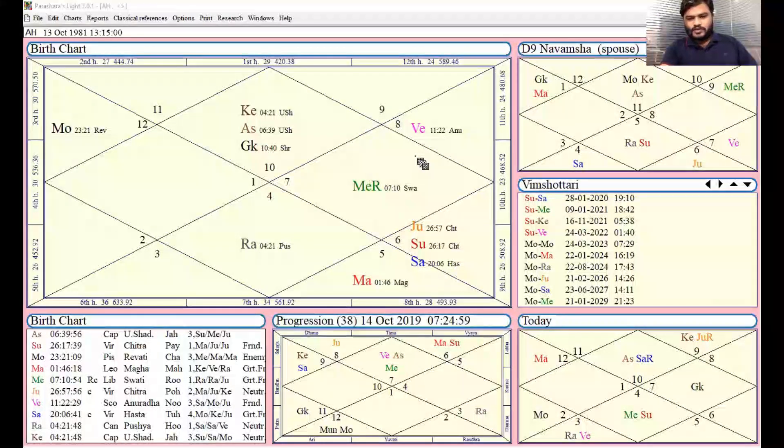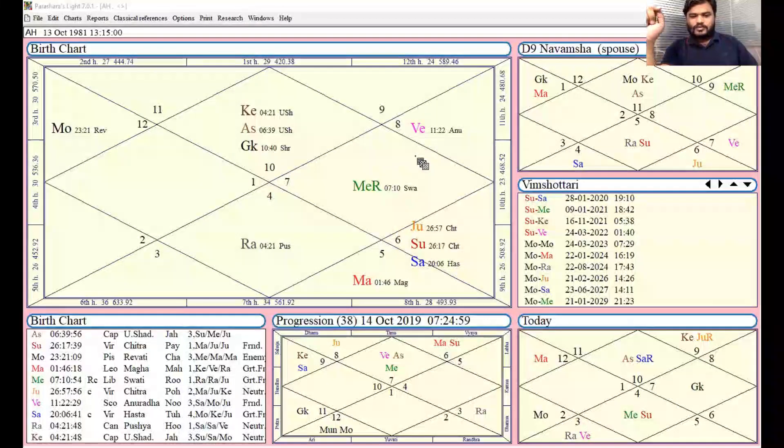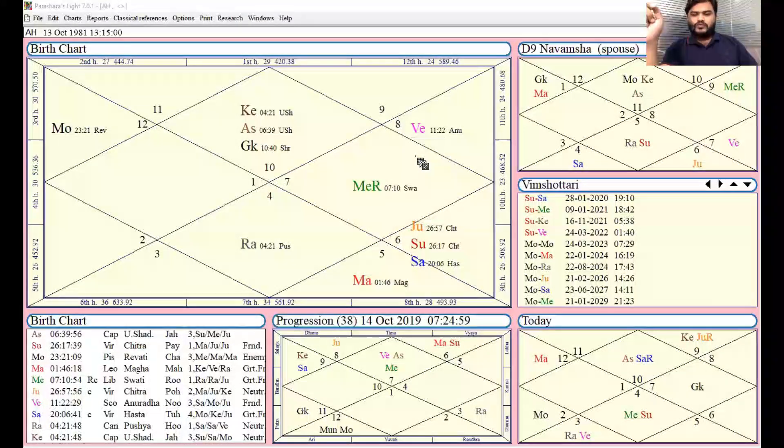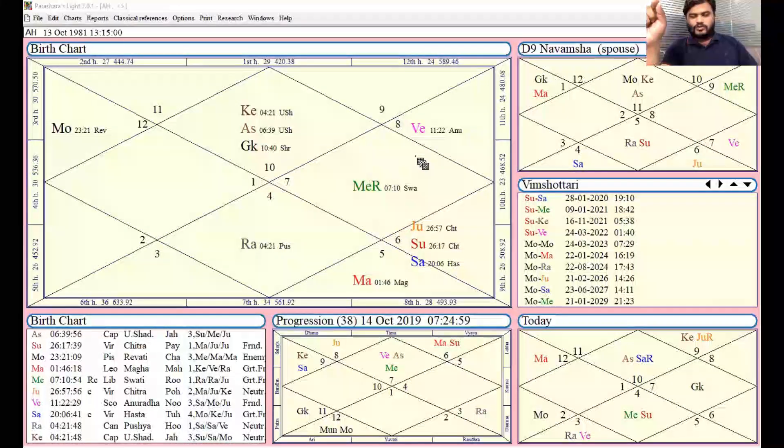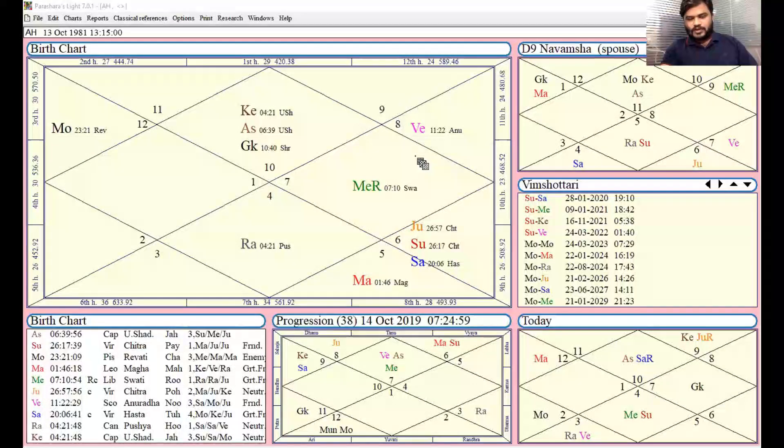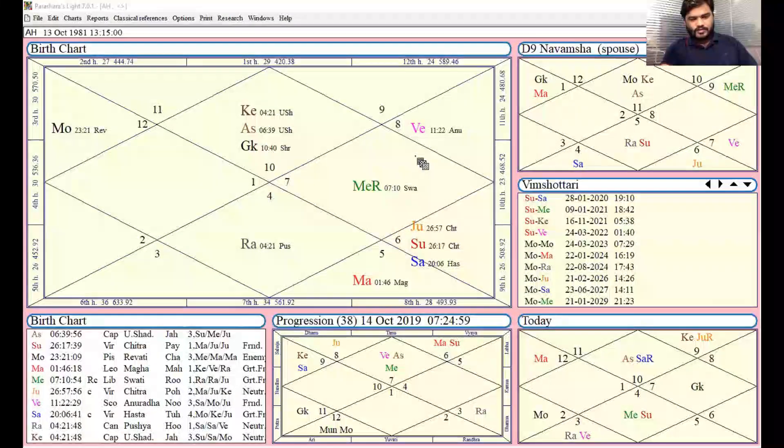Suppose if Rahu is in the eleventh house, there will be manipulation with brothers, elder siblings, or manipulation related to finance. Suppose if Rahu is in the eleventh house in Taurus sign, there will be manipulation related to finance. Like this, you can predict very easily by this simple technique.